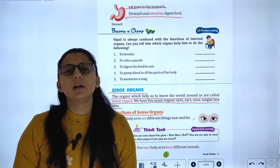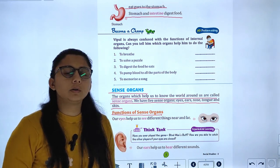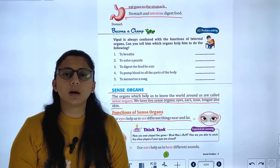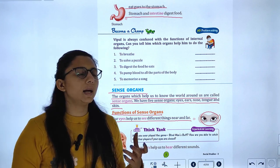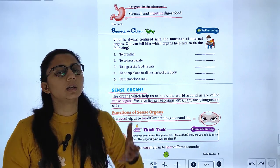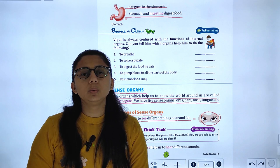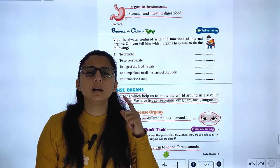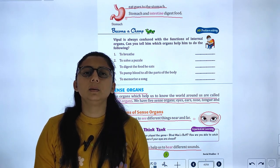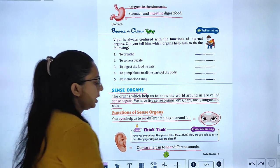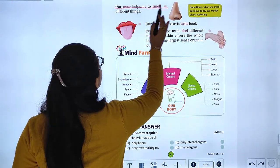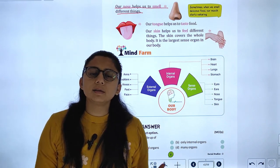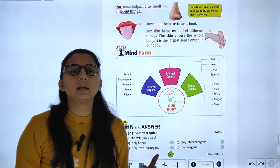The organs which help us to know the world around us are called sense organs. Our eyes help us to see different things near and far. Our ears help us to hear different sounds — pleasant or loud. Our nose helps us to smell different things, like fragrance or foul smell.